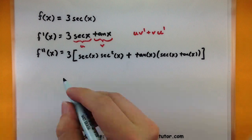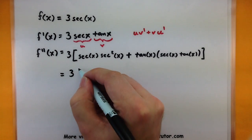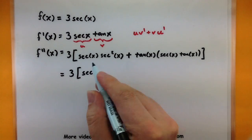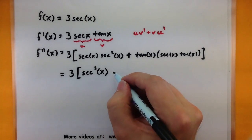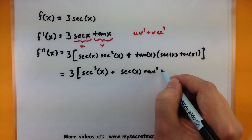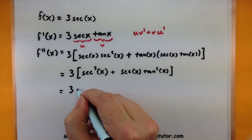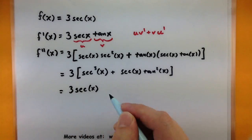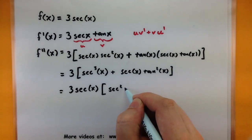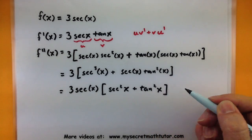Even after just two derivatives this thing gets a lot more complicated very quickly. Let's see what we can do to clean this up. I'll start combining things: so I have 3 times secant cubed of x, then plus secant of x times tangent squared of x. About the only thing I can do to simplify is take out a secant since it's common in both parts — so 3 secant of x multiplied by secant squared of x plus tangent squared of x.